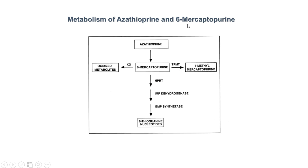Now we're going to dig in and look at the metabolism of azathioprine and 6-mercaptopurine. When administering azathioprine, it is converted into 6-mercaptopurine within the body, and this drug can be shunted down three different pathways. It can either go down the main pathway and get converted into 6-thioguanine nucleotides, which is an active metabolite that leads to immune suppression — therefore this is the pathway of interest.